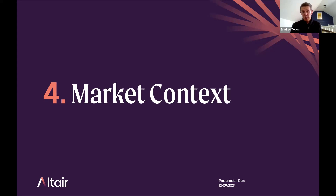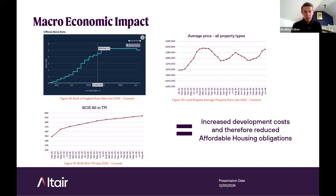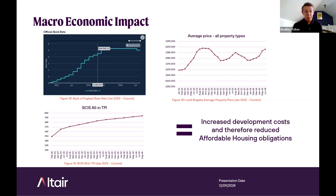How are these assumptions affected given the current market? Over the past couple of years we've had a fairly unstable market. Since the start of January 2022, the banking base rate has gone up by 5 percent, build costs have gone up 13 percent, whilst sales values have only risen 6.5 percent nationally. This combination of costs rising at a quicker rate than sales values has meant that across England, FVAs have been used and affordable housing obligations have been reduced.